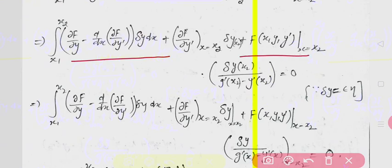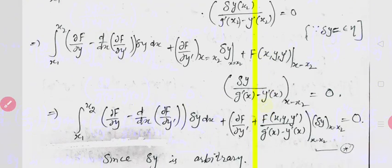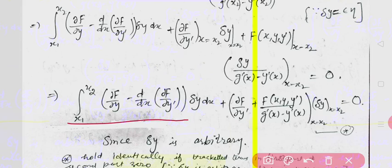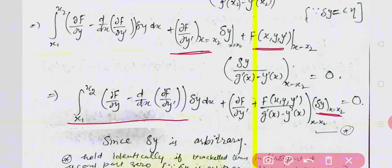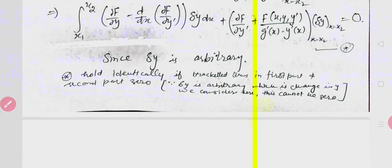After re-writing and collecting all terms, the first integral is as before. The remaining boundary term is (∂f/∂y') * delta y at x2, plus f * (delta y at x2 / (g' - y')) evaluated at x2. Now since delta y is arbitrary, this combined expression plus the integral term equals 0.